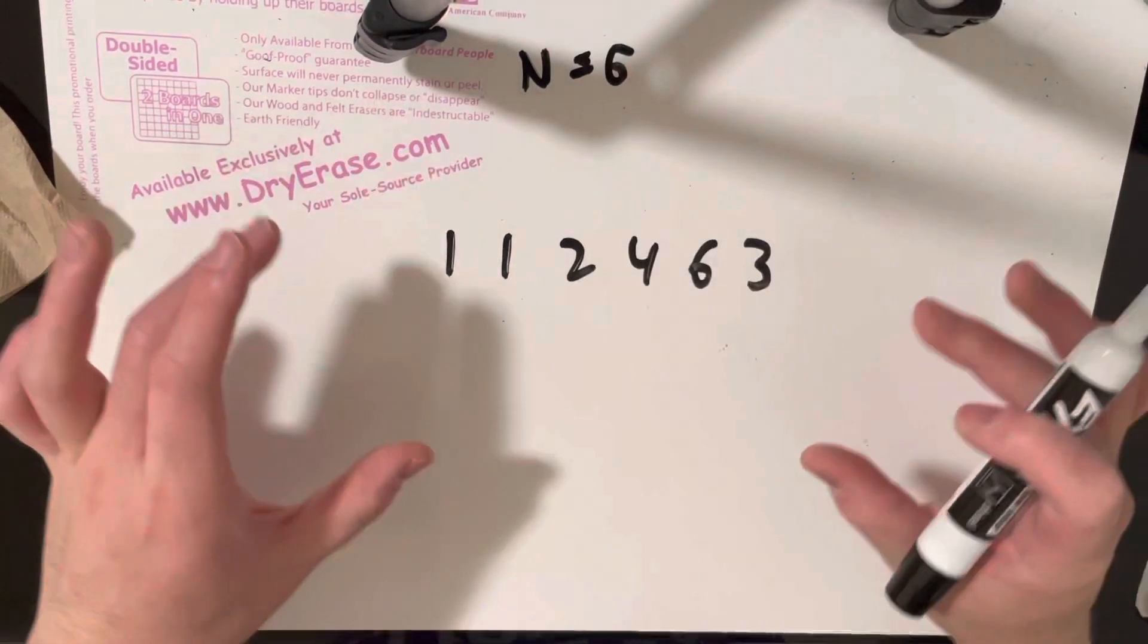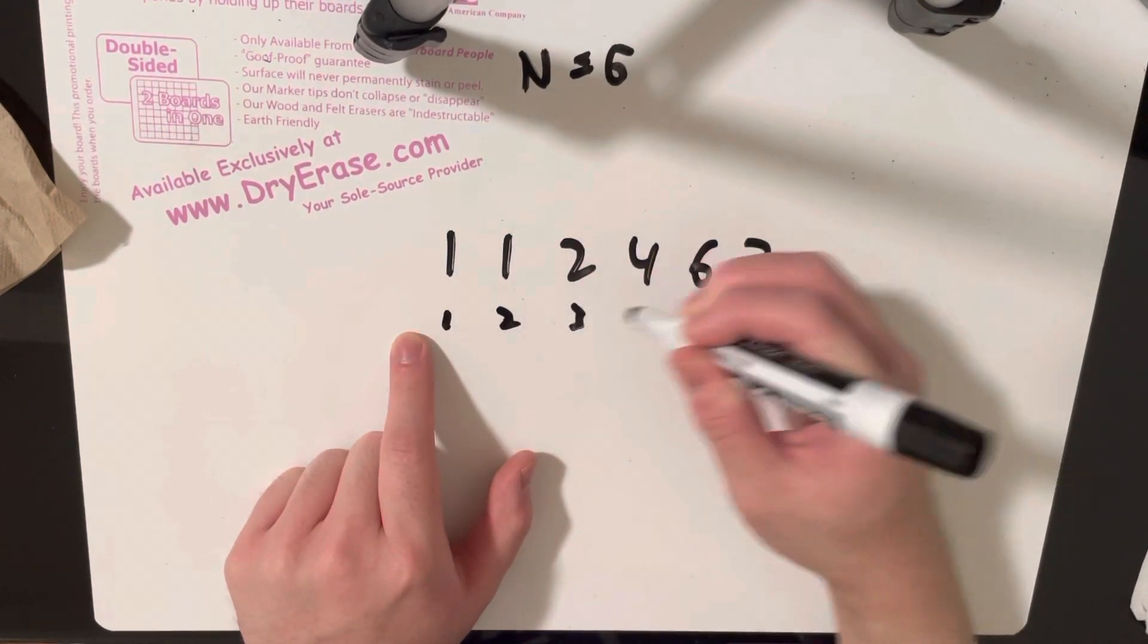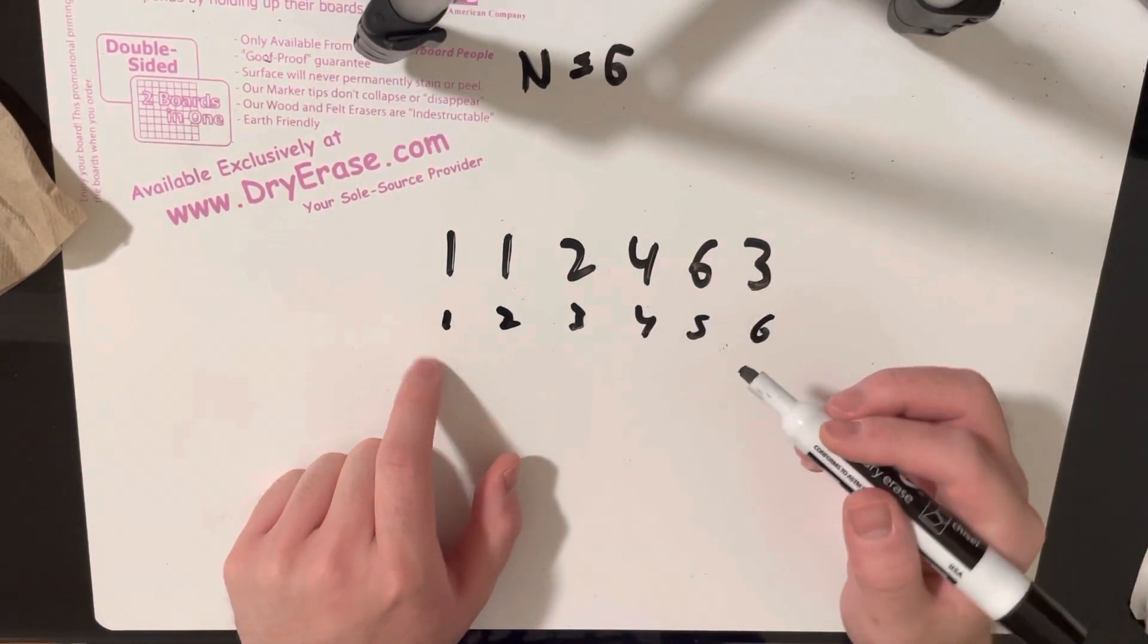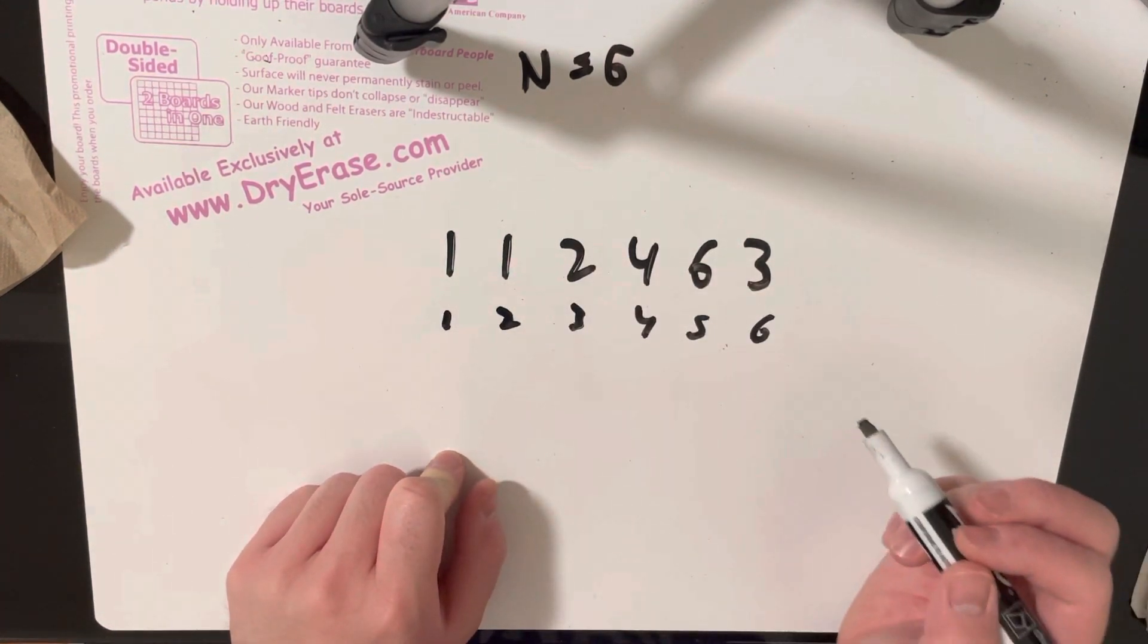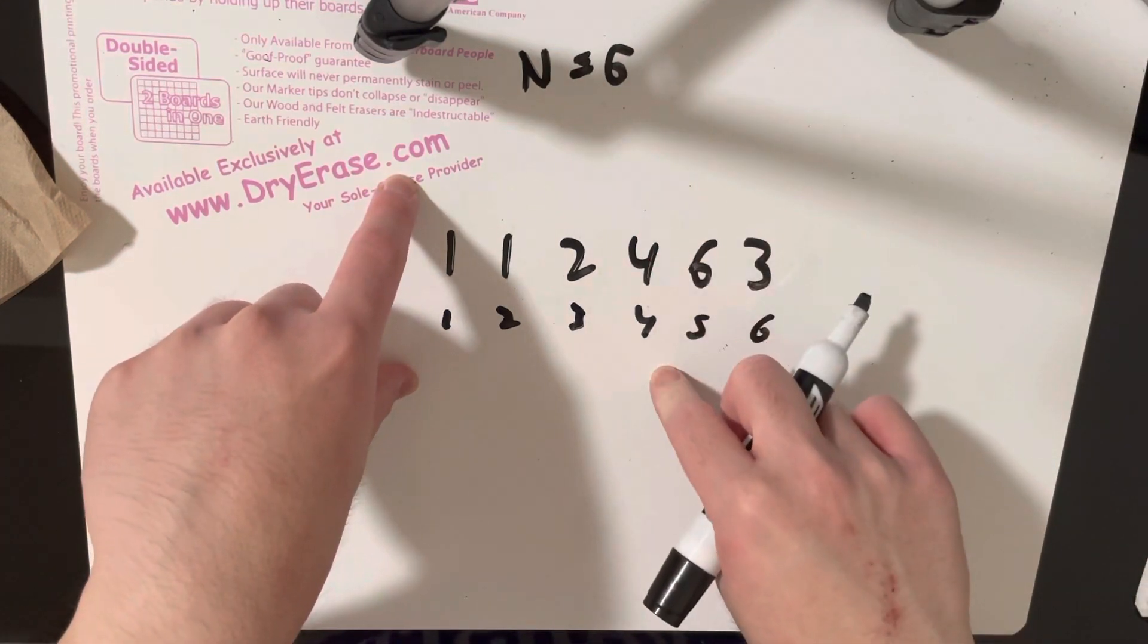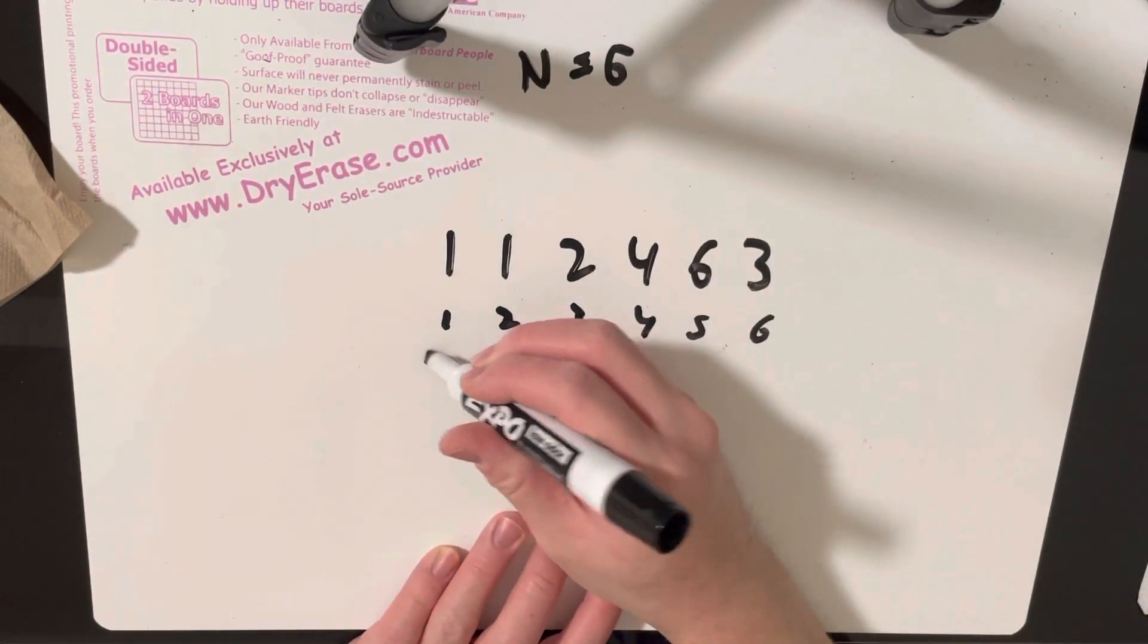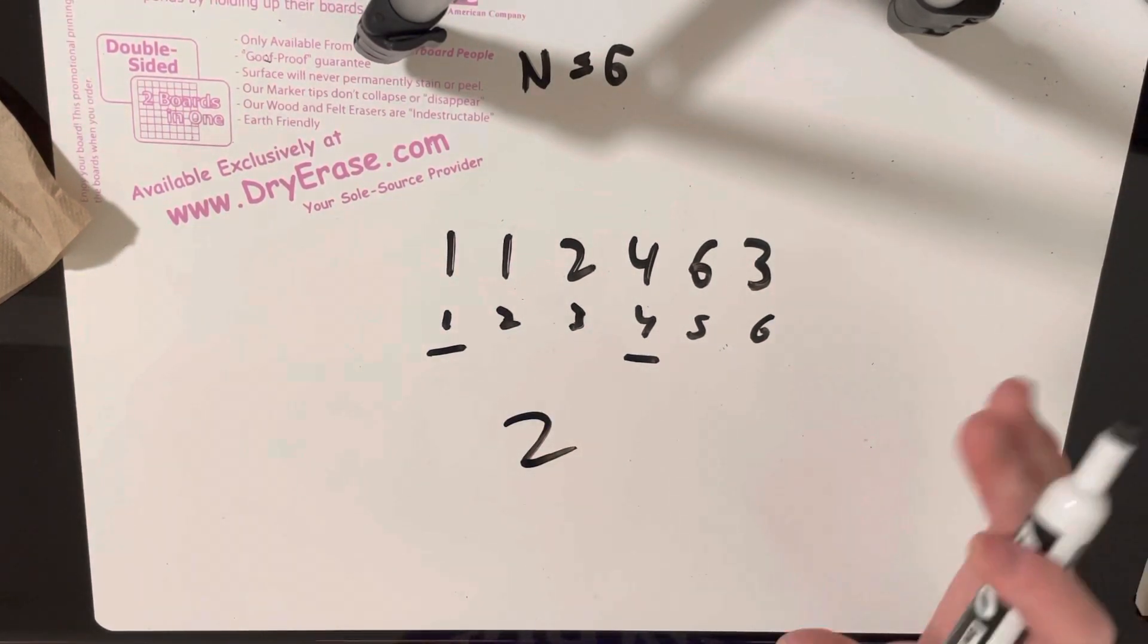So if we don't make any moves here, then this is index 1, 2, 3, 4, 5, 6. In this case, we would have two indices that are equal to its own value, because one is equal to one over here, and four is equal to four over here. And so we essentially have two indices that match if we don't make any moves whatsoever.